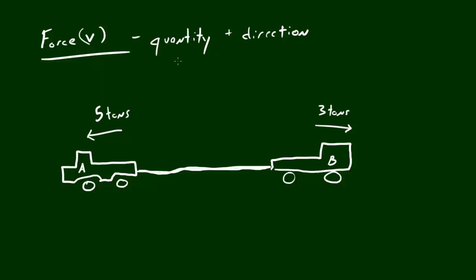So basically, each of these trucks both have a quantity, which is 5 and 3, and a direction, which is left, right, east, west, however you want to name it. So to calculate the, I said next, not the next force. The next thing we need to do is calculate the force of the total system. The net force of these objects put together.